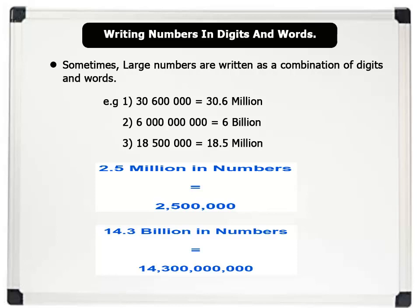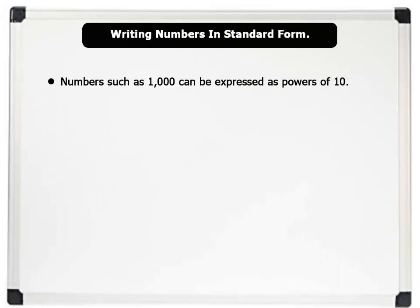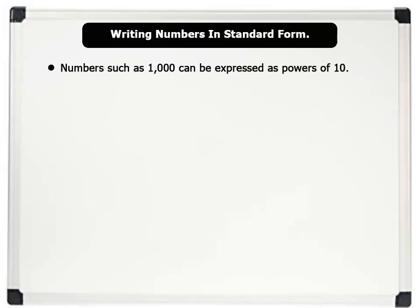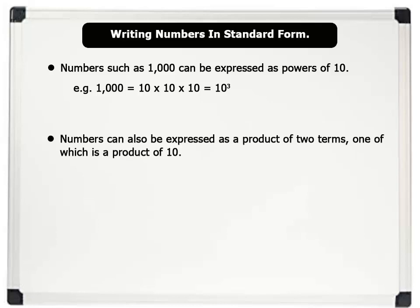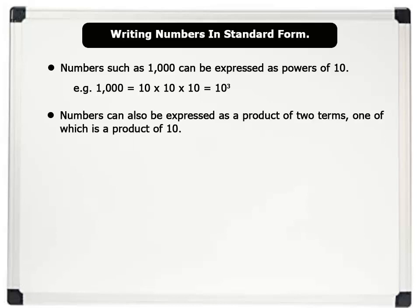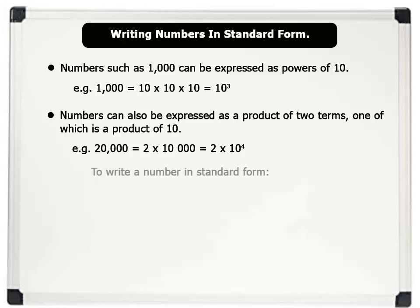Next, let us learn how to write numbers in standard form. Numbers such as 1,000 can be expressed as powers of 10. For example, 1,000 equals 10 × 10 × 10, which equals 10 to the power of 3. Numbers can also be expressed as a product of two terms, one of which is a power of 10. For example, 20,000 equals 2 × 10,000, which equals 2 × 10 to the power of 4.